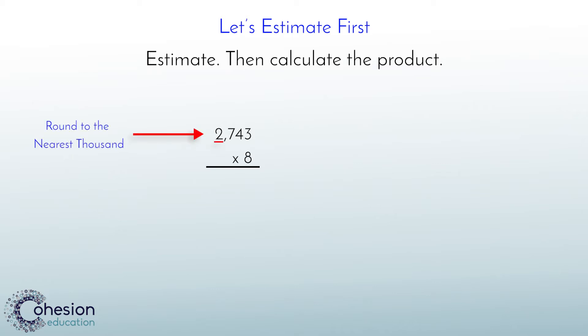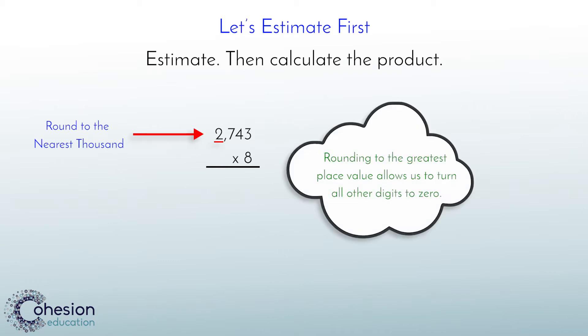We will need to round 2,743 to the nearest thousand in order to make it a number we can easily work with to get an estimate. If the question allows for it, rounding to the largest place value is always a good idea. It allows us to turn all other place values to zero, and zeros are friendly to work with.